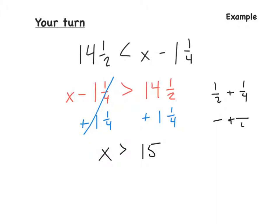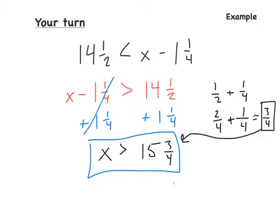So if we use, the common denominator would be 4. So 2 times 2 is 4. So 2 times 1 is 2. Keep that the same. So 2 fourths plus 1 fourths is equal to 3 fourths. And then this, 3 fourths, comes right over here. So x is greater than 15 and 3 fourths. That is our final answer.